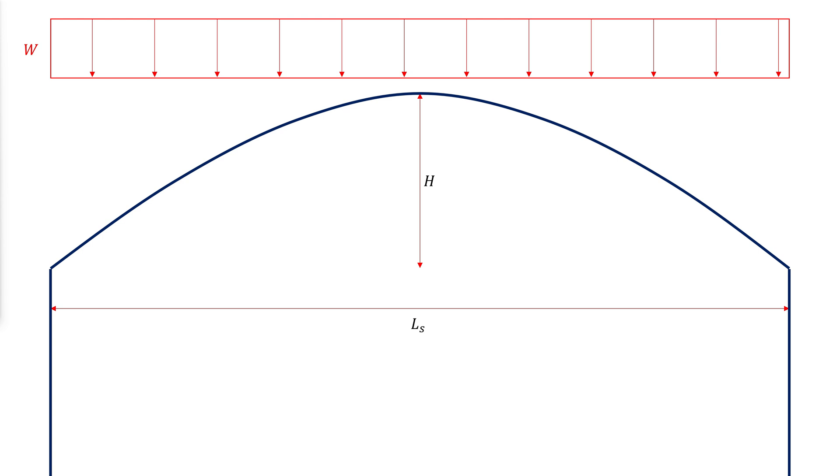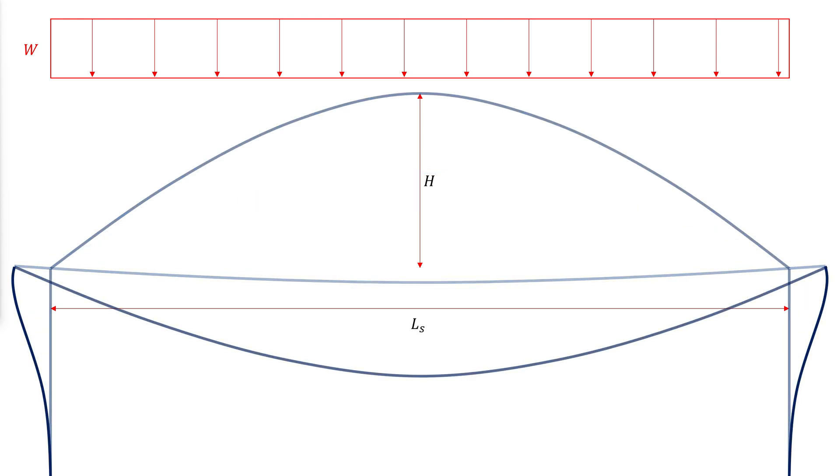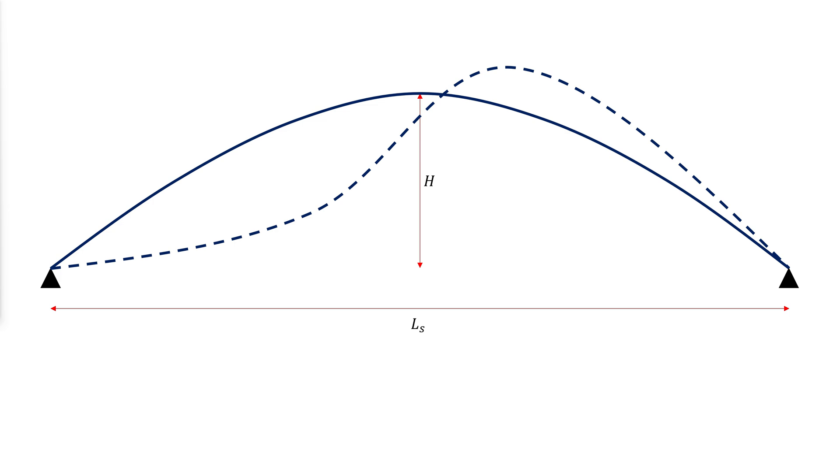Arcs must be designed to prevent snap-through buckling, which is a type of in-plane instability that is sensitive to second-order effects and support spreading. Snap-through buckling can occur in a symmetric mode as shown, or an asymmetric mode.